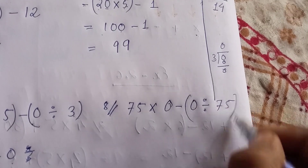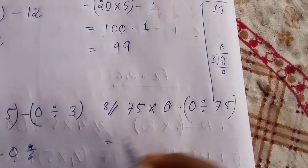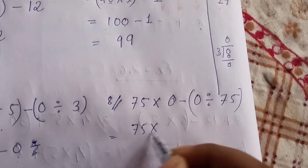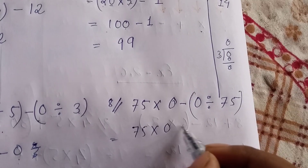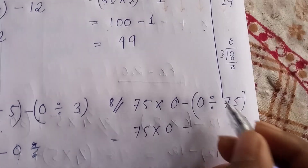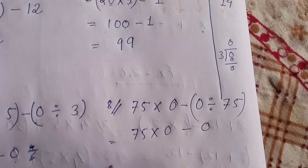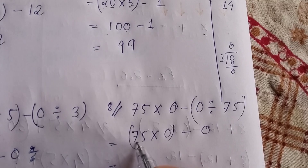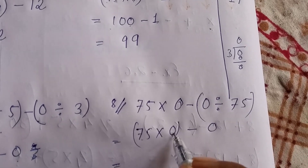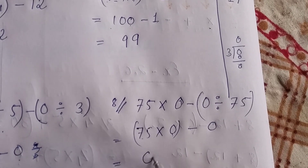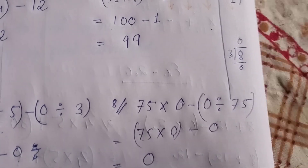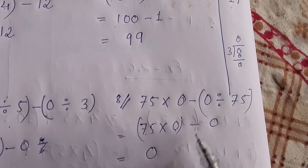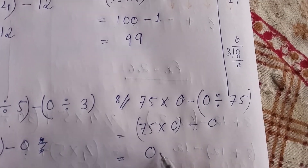Question number 8: if any number is divided by 0, the answer is 0. Then if any number is multiplied by 0, the answer is also 0, so no need to calculate anything further. Minus 0 is also 0.